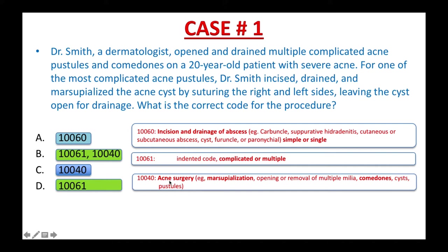10040: acne surgery — marsupialization, opening or removal of multiple milia, comedones, cysts, pustules. Here's the tip for today — please pay attention, it's very important. Anytime you look up and find a CPT code, I want you to read the code description and highlight the main term that describes the procedure, the surgery, or the test. In this case: incision and drainage of abscess, acne surgery — and then the condition or disease, the body site. For example: carbuncle, hidradenitis, abscess, cysts, multiple milia, comedones, cysts, pustules, etc. And finally, terms that describe the quantity or complexity — for example: simple or single, complicated or multiple. This practice will help you identify the main difference between each code.